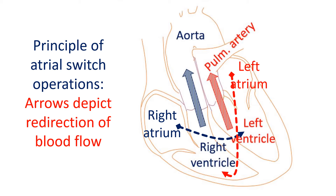Prior to that, transposition of great arteries was treated by switching the return of blood from the body and lungs to the opposite side to functionally correct the transposition. These were called atrial switch operations. The first one, known as the Senning operation using atrial flaps, was described in 1957. The second was the Mustard operation, using pericardium, described in 1963. The pericardium is the outer covering of the heart, pieces of which were taken to redirect the blood flow in the Mustard operation.